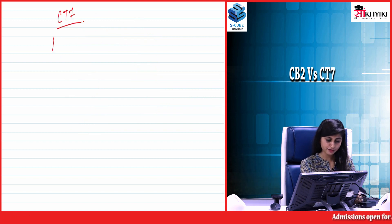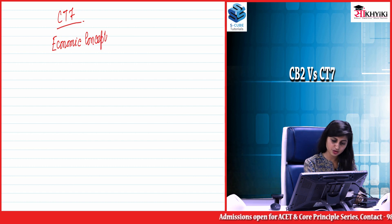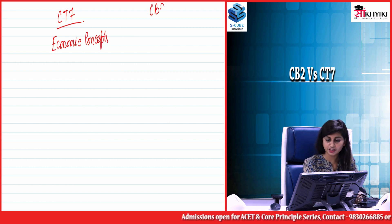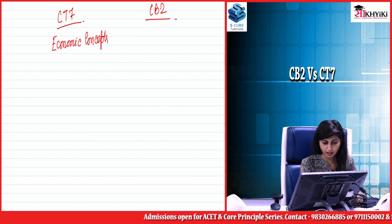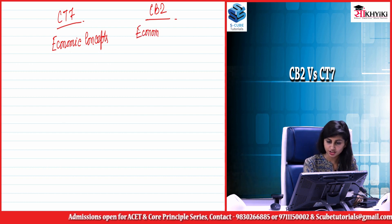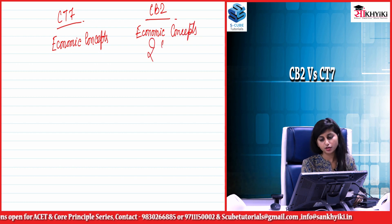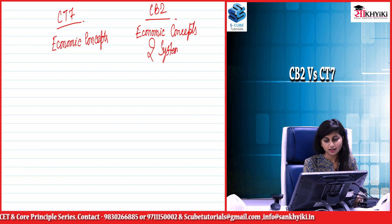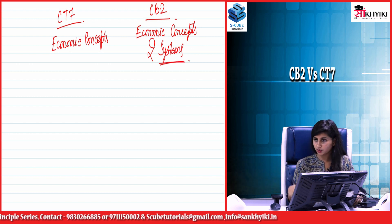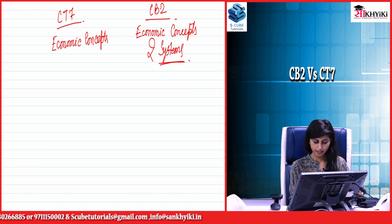In CT7 the first chapter is Economic Concepts, whereas in CB2 it is not much different but requires a much more in-depth knowledge. It is called Economic Concepts as well as Systems, so you have an additional 'Systems' component where you study the various economic systems along with the economic concepts.